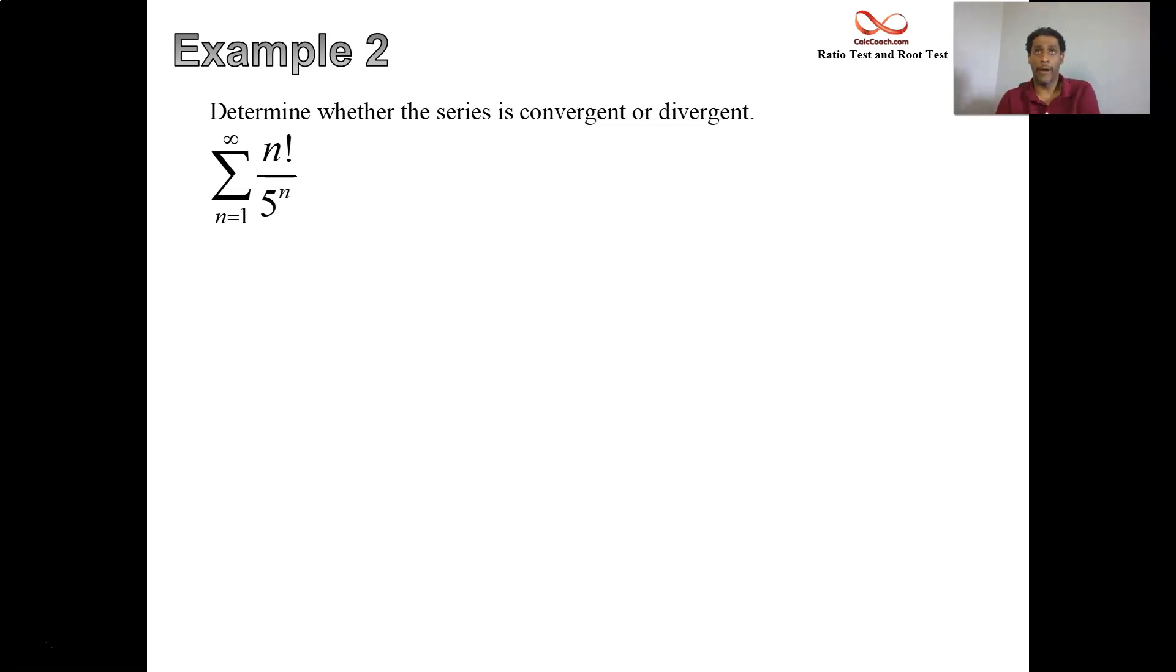So here we go with this particular series n factorial over five to the n. Now the factorial as a mathematical symbol means to multiply that number times all the counting numbers lower than it. We're going to restrict this to have the factorial be some integer value in front of it. If you have five factorial that's five times four times three times two times one, the product of all those. Our job, ratio test works really well with factorials. If you see a factorial that's a red alert that should go off to think about using the ratio test.